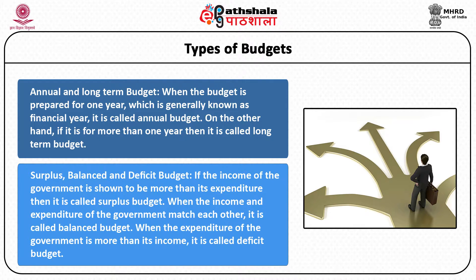Number two: surplus, balanced and deficit budget. As the term suggests, if the income of the government is shown to be more than its expenditure, then it is called a surplus budget. When the income matches the expenditure, it is called the balanced budget. And when the expenditure exceeds the income, it is called a deficit budget. However, the surplus and deficit budgets are not recommended, as the surplus gives a feeling that the government is not doing enough, and if there is a deficit, it may lead to inflation and high prices.